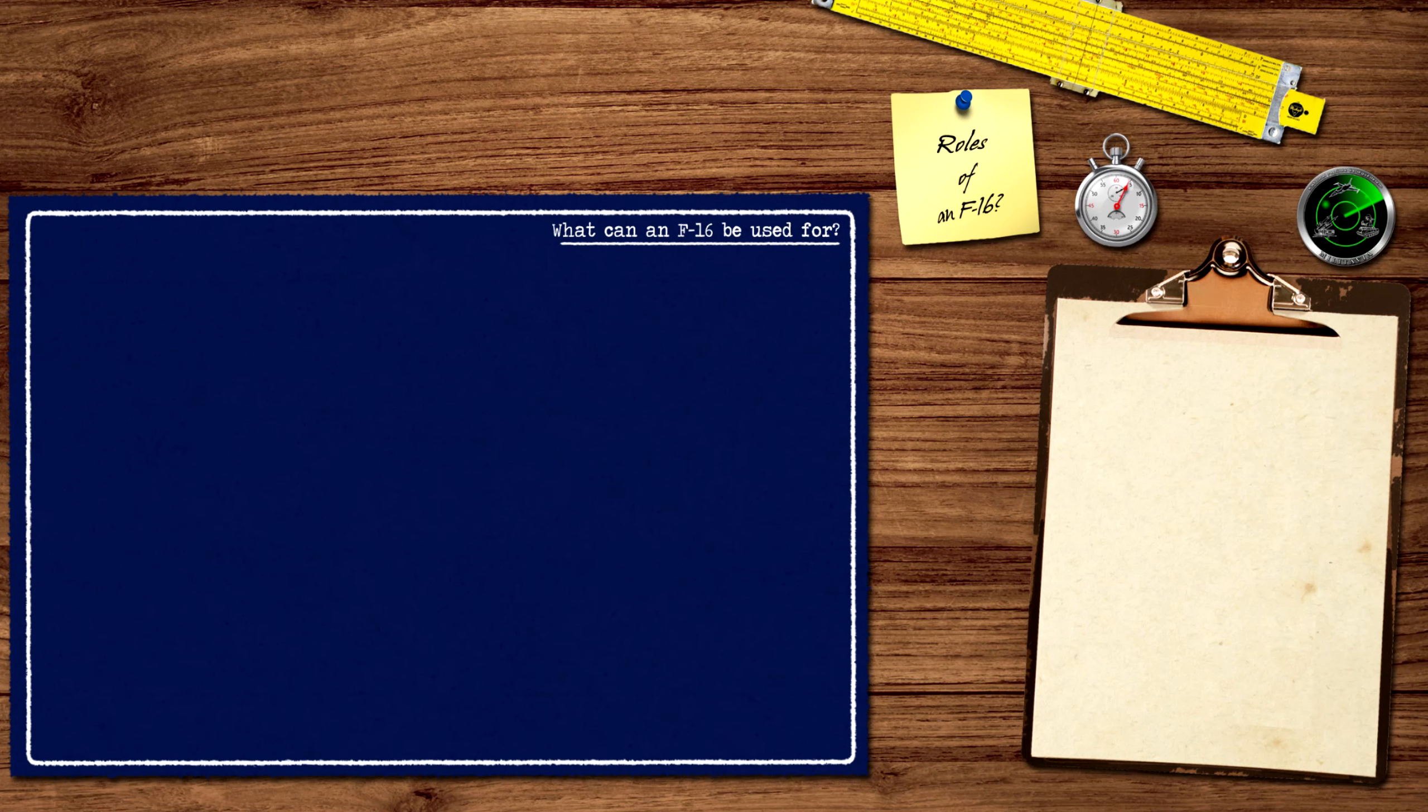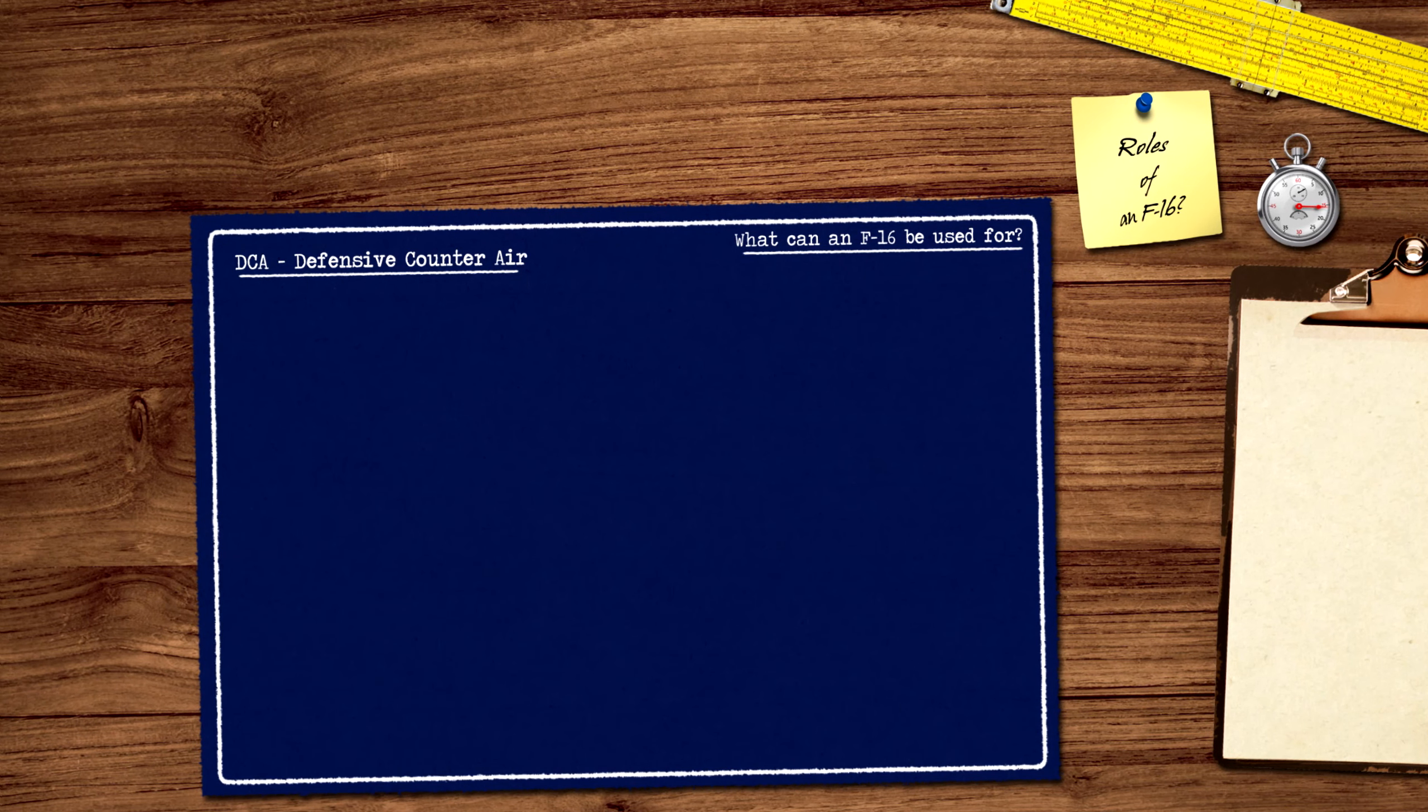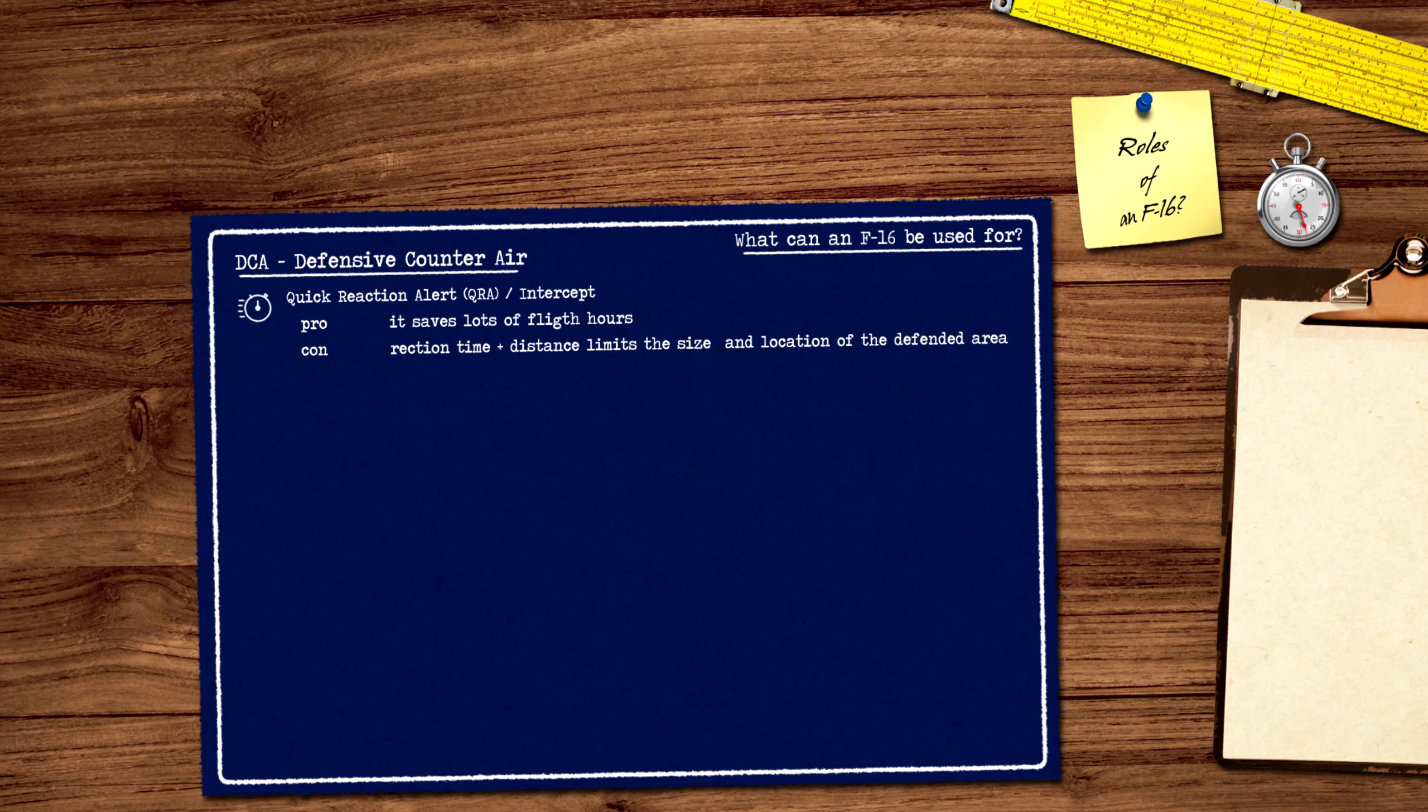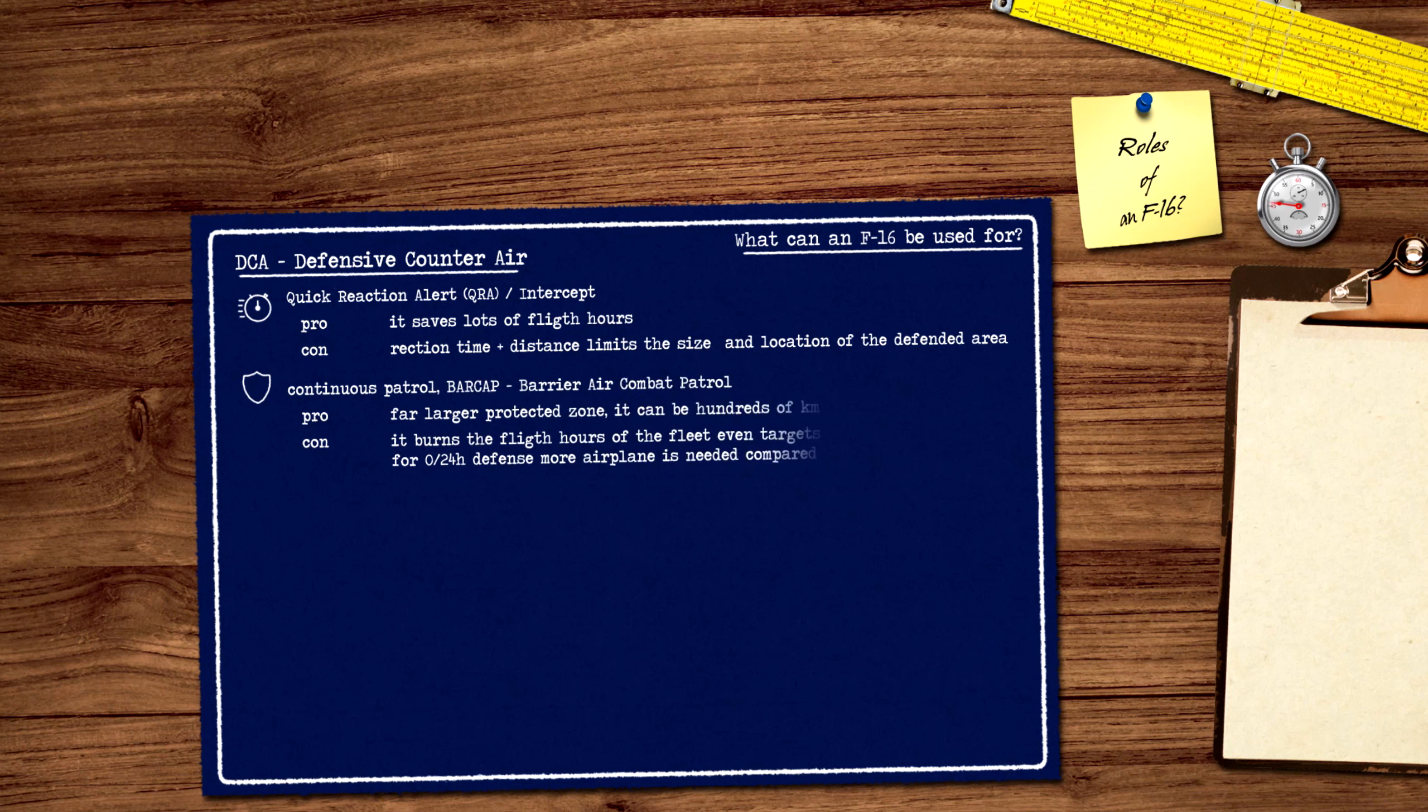A fighter jet can be used for many roles in many different ways. Air-to-air missions basically can be divided into the defensive and offensive role. The defensive role can be executed in 2 very different ways. The first is ground readiness. A part of the fleet is permanently kept at a certain level of readiness. At the highest level, takeoff is possible within a few minutes from the alarm. Another method is continuous patrolling, which creates a barrier in a defined area. This is why it's called BARCAP, Barrier Combat Air Patrol. Patrols are typically carried out at a high altitude to reduce fuel consumption and maximize the patrol time.